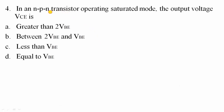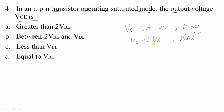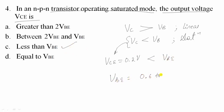Fourth question: in an NPN transistor operating in saturation mode, the output voltage VCE is given by — we have collector voltage and base voltage. If collector voltage is greater than base voltage, the transistor operates in linear/active region. If collector voltage is less than base voltage, it operates in saturation region. In saturation, VCE is taken as 0.2 volts, which is less than VBE (ranging from 0.6 to 0.7 volts). Option C is correct.